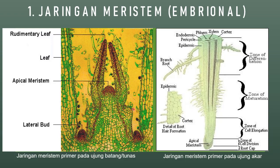Silakan perhatikan ada dua gambar yang tersedia di sini. Ini merupakan contoh jaringan meristem atau jaringan embryonal. Kedua contoh ini termasuk ke dalam jaringan meristem primer. Yang pertama, jaringan meristem primer yang terdapat pada ujung batang, atau sering kita sebut dengan tunas. Jaringan ini memiliki sel-sel yang aktif membelah dan biasanya lebih muda dibandingkan dengan jaringan lainnya. Pada ujung batang atau tunas, jaringan pada batang tersebut lebih lembek dan warnanya lebih muda. Jaringan inilah yang menyebabkan batang menjadi bertambah panjang.